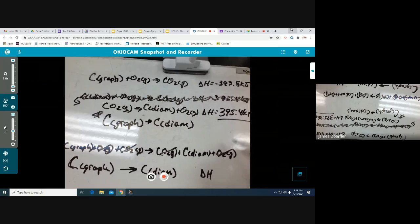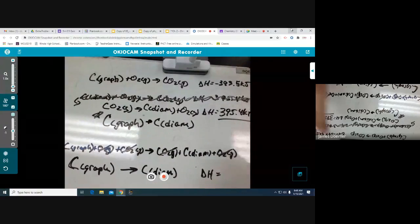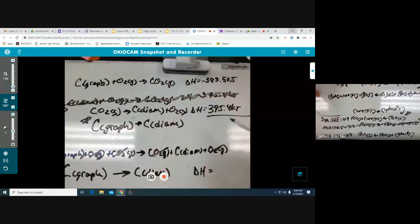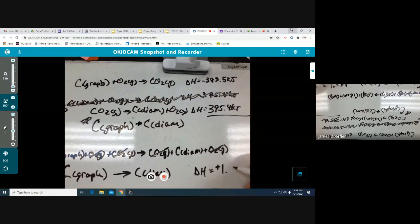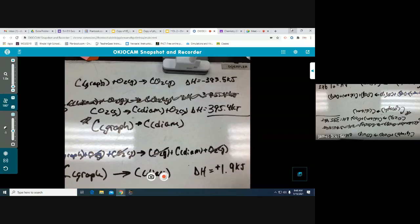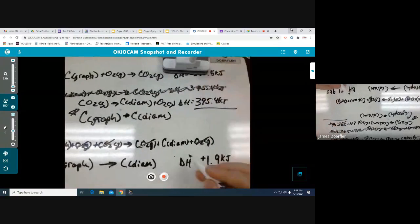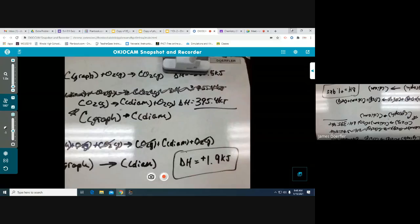Take negative 393.5 kilojoules, add 395.4 kilojoules, and you should get a change in enthalpy of positive 1.9 kilojoules. That's how you do Hess's law.